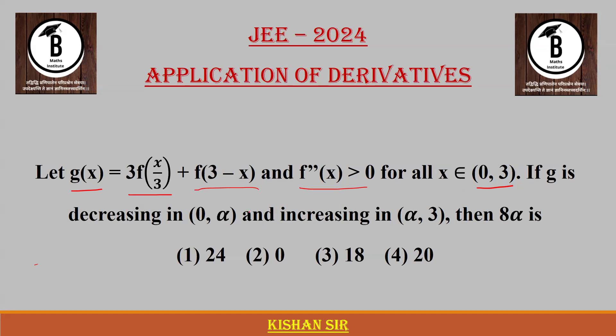If G is decreasing in (0,α) and increasing in (α,3), then we have to find 8α. What will we find out? Simply, we will find out the alpha value.